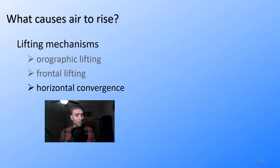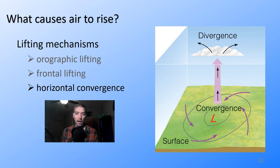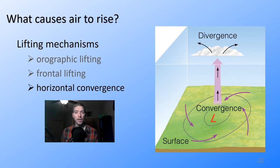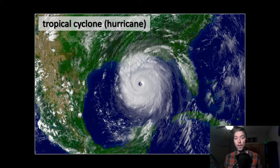Next we have horizontal convergence. Think back to our low pressure system where winds are rushing toward the center, driven by the Coriolis effect, friction, and drag forces at the surface, creating cyclonic motion. This horizontal convergence forces air upwards, diverging in the upper atmosphere, producing rising air masses, cooling, condensation, and cloud formation. We typically see this expressed in hurricanes, tropical cyclones, and mid-latitude cyclones — we'll dive into those in future videos.